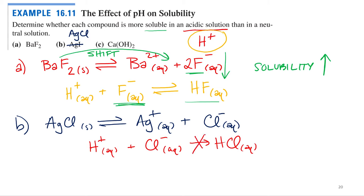H plus is not going to bind or form a bond with chloride because chloride is the conjugate base of HCl, which we know is a strong acid, right? 100% ionization. No coming back. This would be the reverse reaction. H plus and Cl minus producing HCl. So nope, this ain't going to happen because HCl is a strong acid. So if H plus doesn't react with chloride, what happens to the concentration of chloride? Nothing. It doesn't change. So if chloride's concentration doesn't change, what happens to the equilibrium? Nothing. It stays the same. The solubility doesn't change in acidic conditions because HCl is a strong acid.